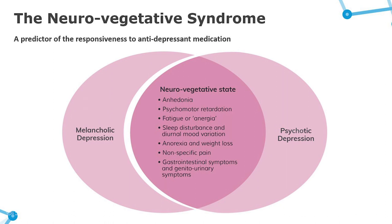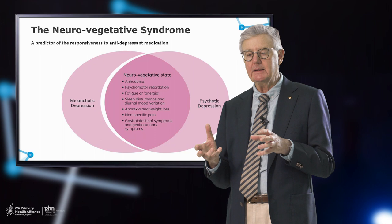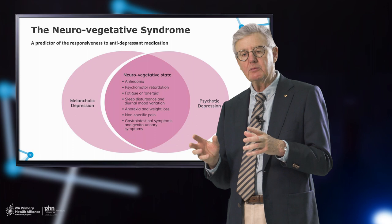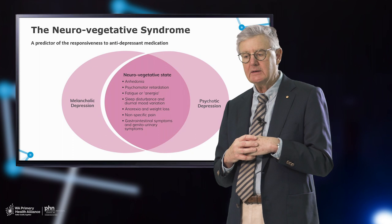Let's look at the neurovegetative syndrome. It is characteristic of melancholic depression and, in its most severe form, psychotic depression. Both have in common the neurovegetative syndrome — sometimes called physiological shift syndrome — which comprises firstly anhedonia: loss of interest, loss of passion, loss of motivation. The next most important symptom is psychomotor retardation. Bodily slowing has been recognised as a most important symptom — people simply don't have the energy or ability to get out of bed.